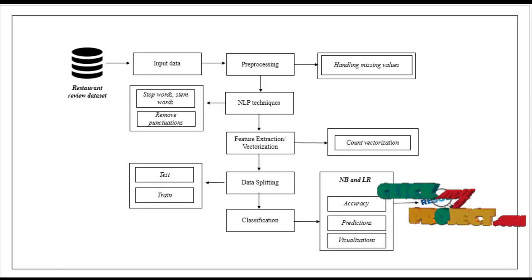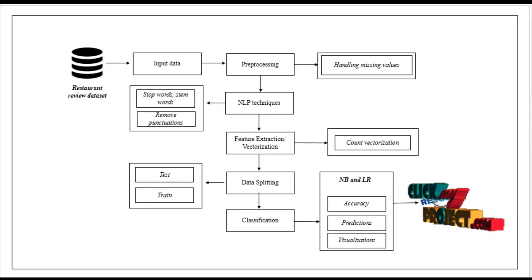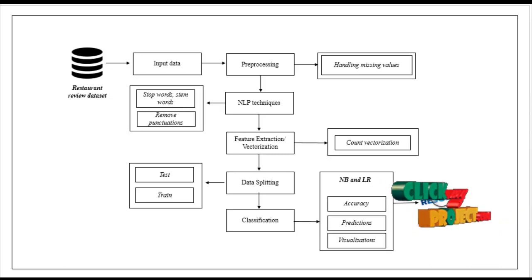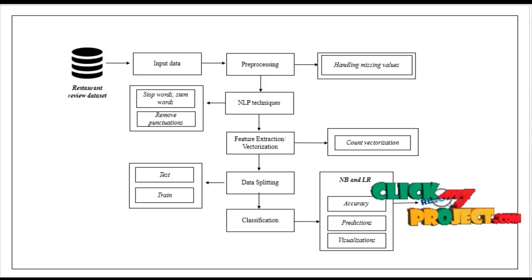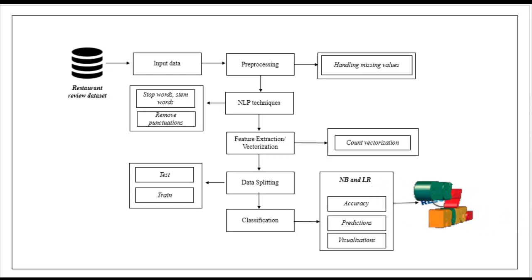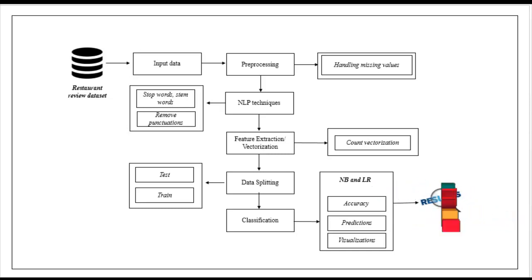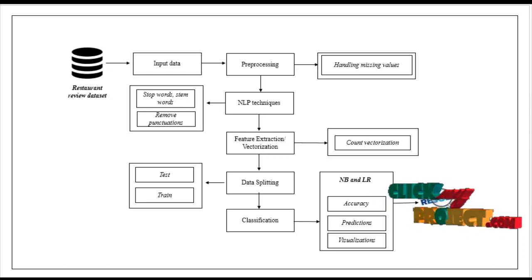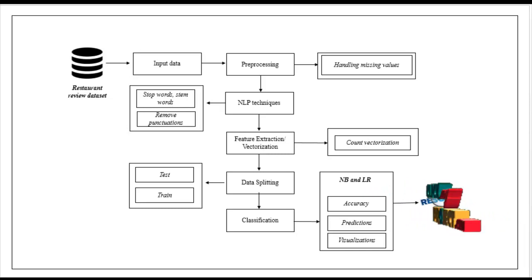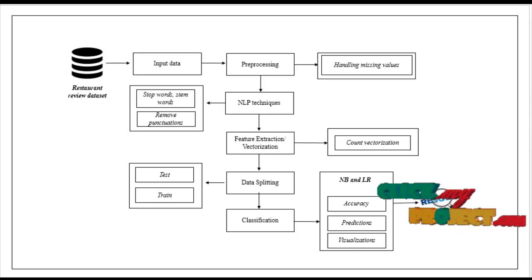With the help of these algorithms, we predict whether a review is either positive or negative. The experimental results show performance metrics like accuracy, which represents the overall prediction — how the model performs effectively in terms of percentage. Visualization shows how many reviews are positive and how many are negative in the form of a graph. This is the flow of our project.